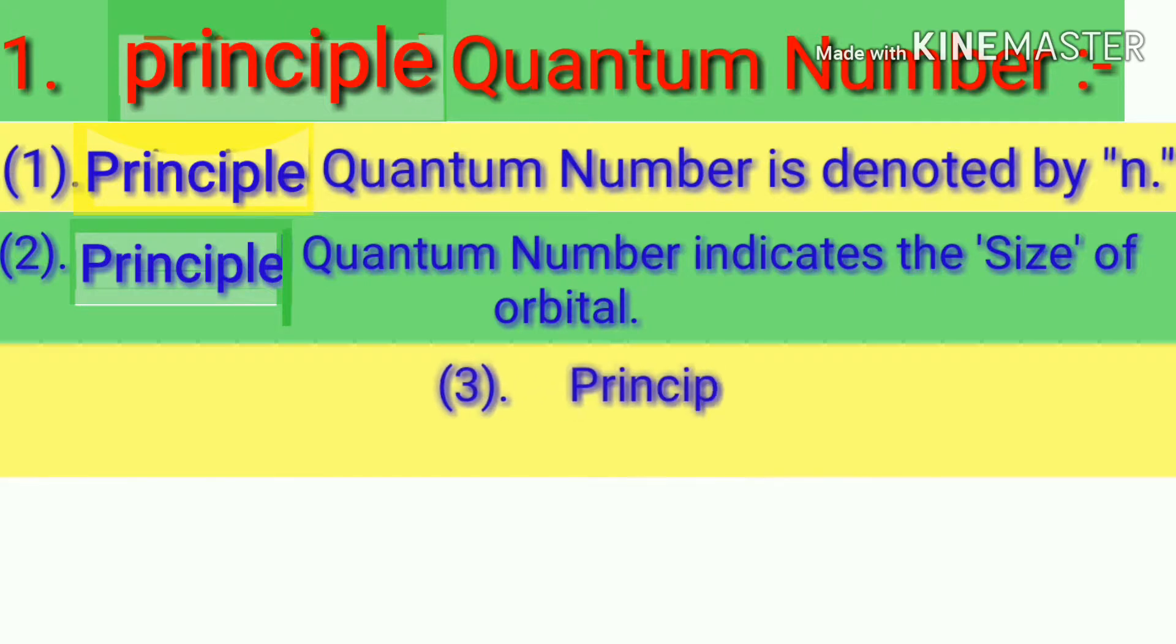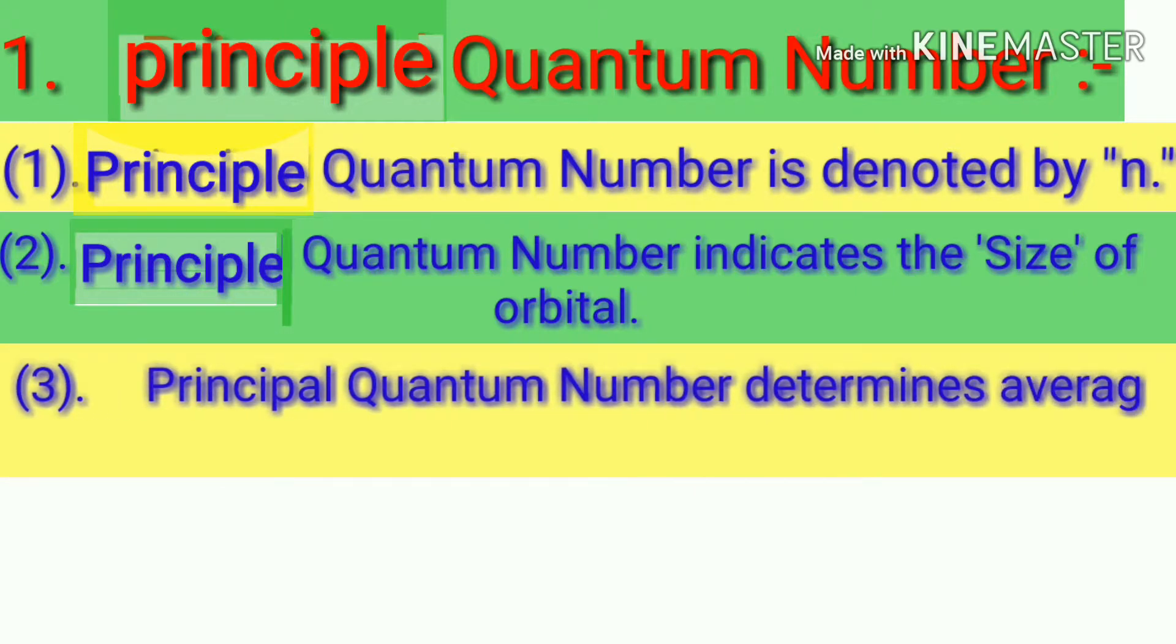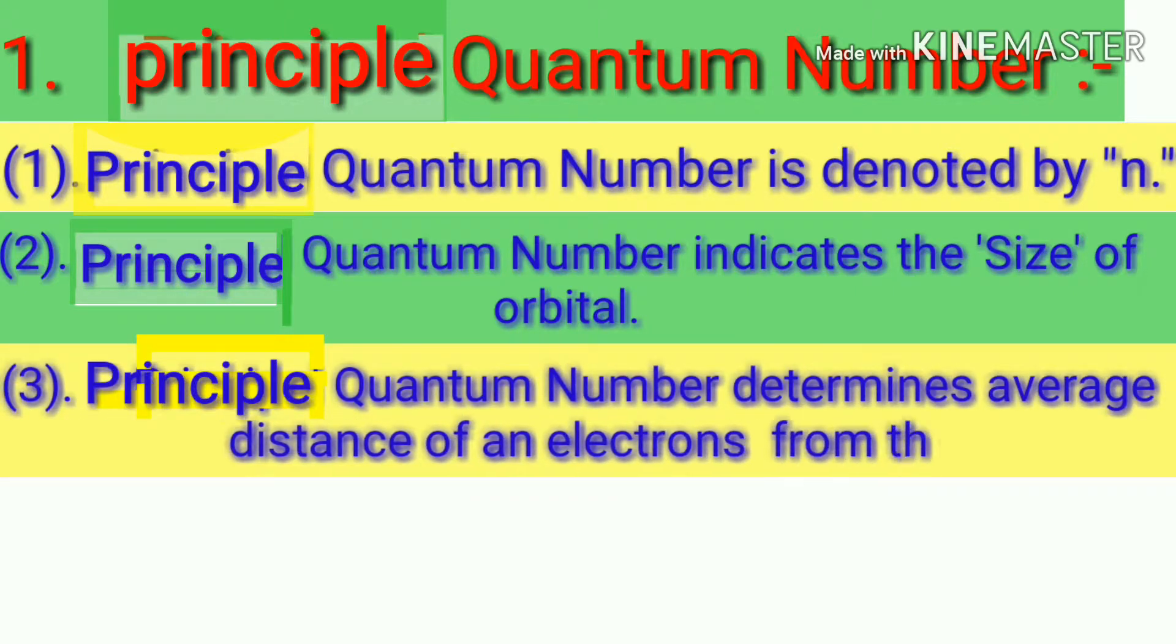Principal quantum number determines average distance of an electron from the nucleus.